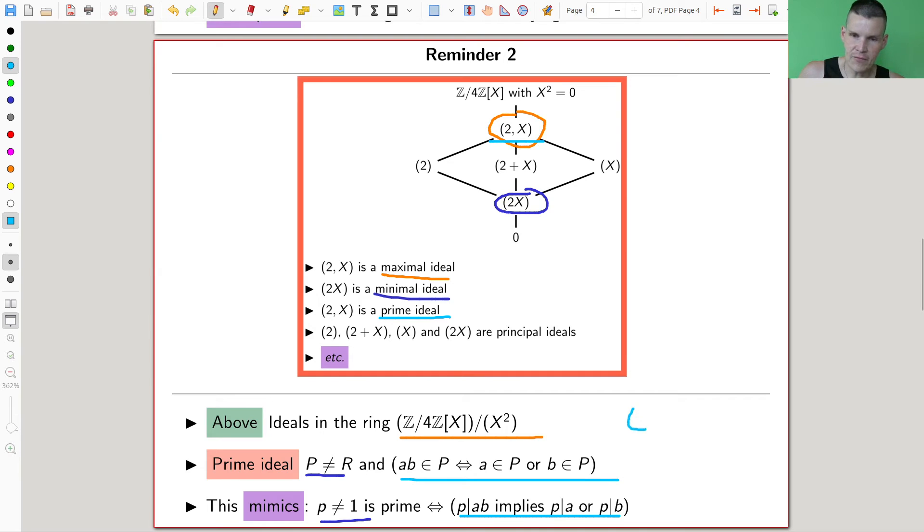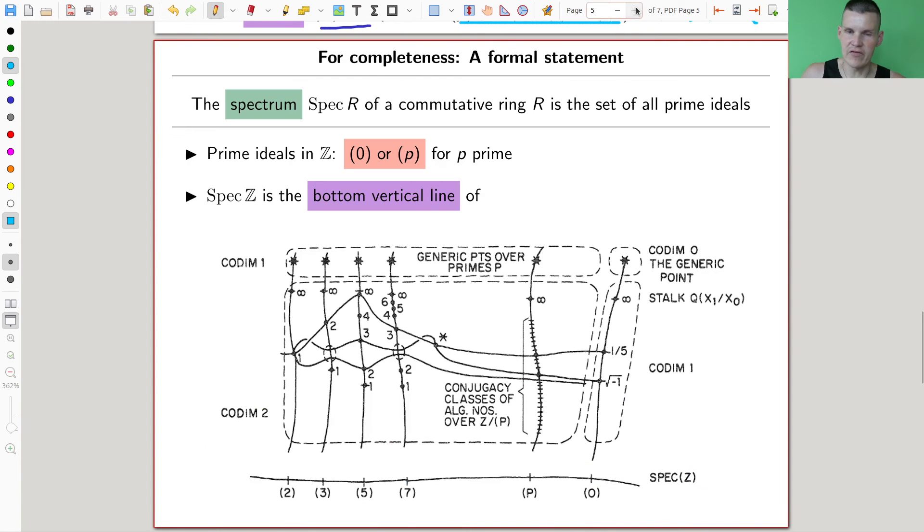A number is a prime if whenever you divide a product, you divide either of the two factors. For example, 4 divides 2 times 2, but 4 does not divide 2. So 4 is not a prime number. Essentially, that's what this condition is. And if you translate that into ideal language, you get: what is a prime ideal? A times B in the ideal if and only if A or B is in the ideal. So the division is somewhat replaced by being inside of. And this is like the correct notion that we need in algebraic geometry.